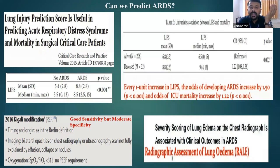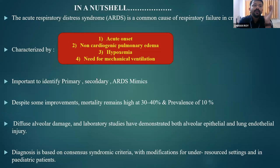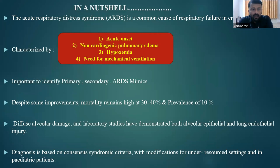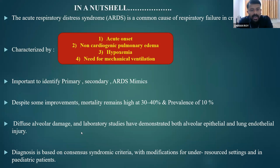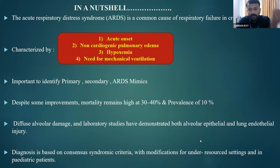In summary, acute respiratory distress syndrome is a common cause of respiratory failure in critically ill patients, characterized by acute onset, non-cardiogenic pulmonary edema, hypoxemia, and need for mechanical ventilation. It is important to identify primary pulmonary ARDS, secondary extrapulmonary ARDS, and ARDS mimics like cardiogenic pulmonary edema — where echocardiography is useful. Despite improvements, mortality remains very high. Diffuse alveolar damage and laboratory studies demonstrate both alveolar epithelial and capillary endothelial injuries. Diagnosis is mainly based on consensus syndromic criteria, with modifications for under-resourced settings and pediatric patients.